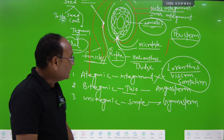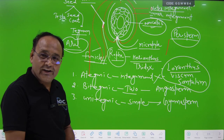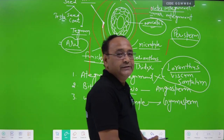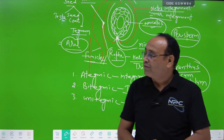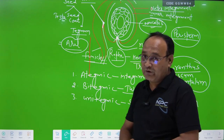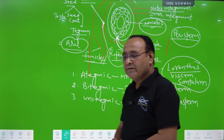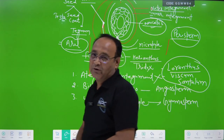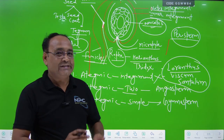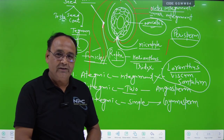So dear students, today we have discussed the structure of the carpal or pistil and the structure of the ovule. In the next class, we will discuss megasporogenesis. Thank you.